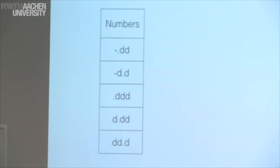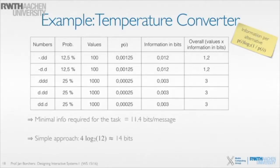In a simple approach, if we wanted to make this even more efficient, we have 12 symbols: the digits zero to nine, the decimal point, and the minus sign. To keep it simple, we can say each of these is equally likely — that's probably not quite correct in reality, but close enough. These are less likely than the others because we have this distribution saying three quarters are positive values and one quarter of the numbers will be negative, those with the minus sign.